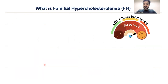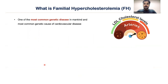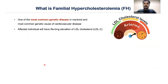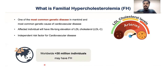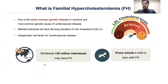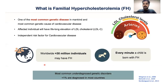So what is familial hypercholesterolemia? It is one of the most common genetic diseases in mankind, and one of the most common genetic causes for cardiovascular diseases. Affected patients will have a very high level of LDL throughout their lifetime, and this high level of LDL and its accumulation will cause atherosclerosis plaque, making it an independent risk factor for cardiovascular diseases. It is suspected that around 30 million individuals may have FH worldwide, and every minute a child is born with this genetic condition. But unfortunately, less than 1% are actually diagnosed in most countries, making FH one of the most common underdiagnosed genetic disorders.